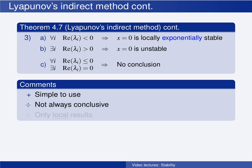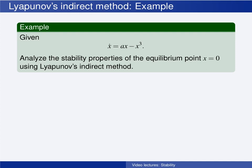The great advantage of this method is that it is simple to use. The drawbacks are that the method is not always conclusive, and that it only gives local results. We cannot determine whether the origin is globally asymptotically or exponentially stable using this method.